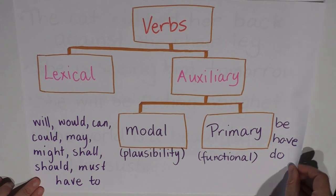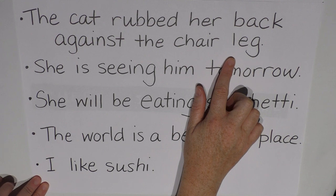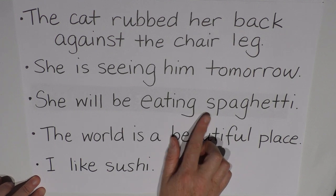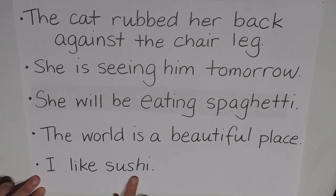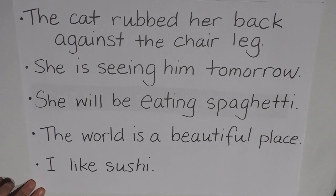Here are our five sentences: The cat rubbed her back against the chair leg. She is seeing him tomorrow. She will be eating spaghetti. The world is a beautiful place. And I like sushi. Just to give you a hint, there is only one clause per sentence — one verb phrase per sentence. So we can go by the rule that there's going to be just one lexical verb per sentence and up to four auxiliary verbs per sentence. We will not see an auxiliary verb unless there is a lexical verb with it.